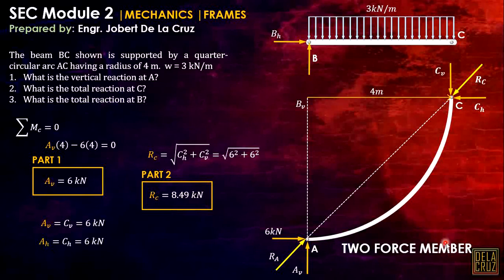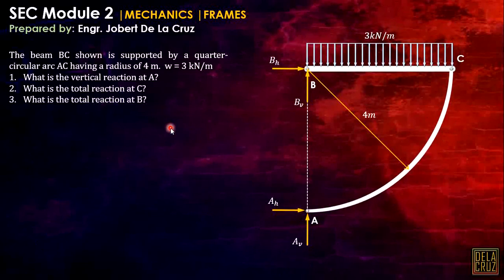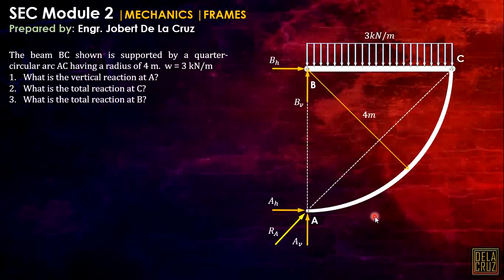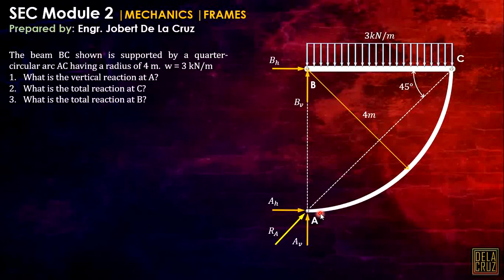Since RA equals RC, we can directly compute RC from RA. The big advantage of identifying a two-force member is that we can calculate the angle of inclination of the total reaction using geometry alone. Since both dimensions are 4 meters (the radius), the angle is 45 degrees — so the total reaction of A is inclined at 45 degrees to the horizontal.